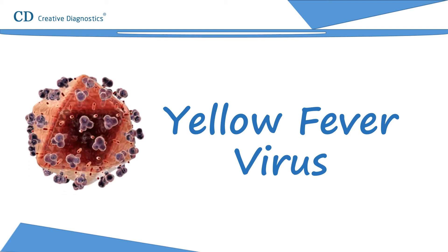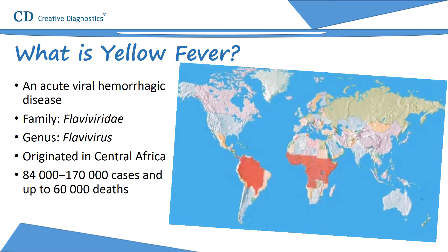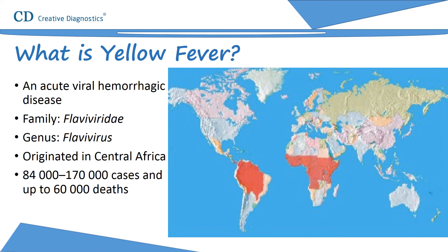This video lecture discusses yellow fever virus. Yellow fever is an acute viral hemorrhagic disease caused by yellow fever virus, a prototype of the genus Flavivirus of the family Flaviviridae. People first isolated the yellow fever virus from a rhesus monkey inoculated with serum samples from a patient in Ghana in 1927. Yellow fever is the first identified human virus.